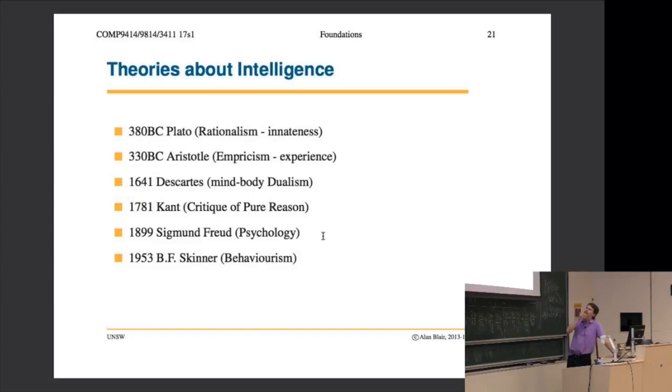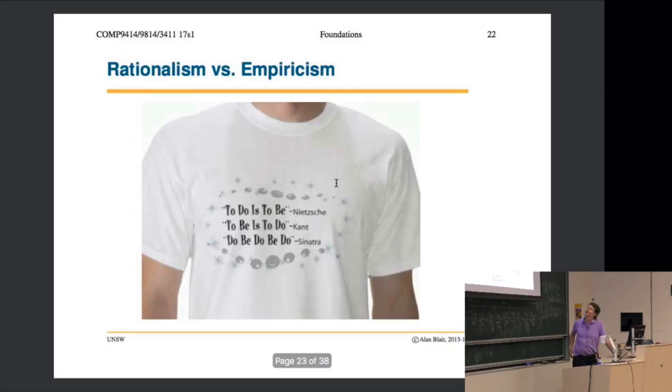Sigmund Freud in 1899 published The Interpretation of Dreams. His theories are probably not accepted today in all their detail, but he made this important contribution that he emphasized the role of the subconscious mind - there's a lot going on in our minds that we're not consciously aware of. Skinner's behaviorism continued this rationalism-empiricism debate.